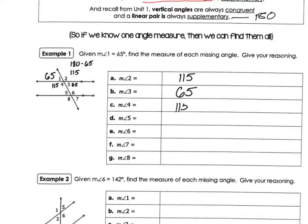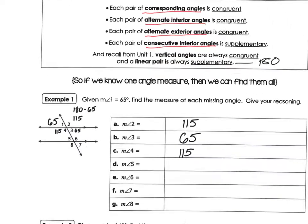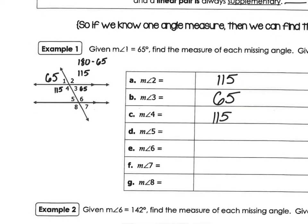Now we can use corresponding angles, alternate interior, alternate exterior, and consecutive interior to figure out the bottom angles. My suggestion: once you get the top angles, use the corresponding angle method. Angle one corresponds to angle five — same position — so five is 65. Angle two corresponds to angle six, so six is 115.